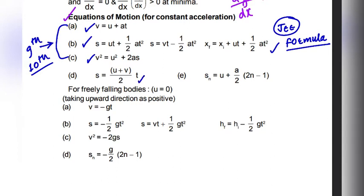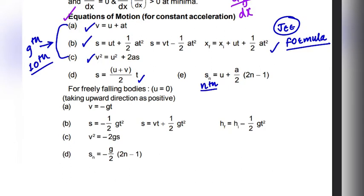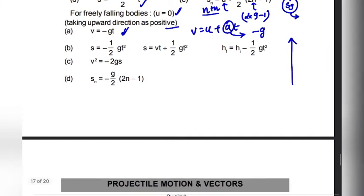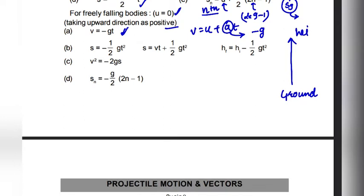After this, we have the equation for the nth second: S_nth = u + a(2n−1)/2. Then for a freely falling body, the initial velocity u is zero. We take upward as positive, so when falling downward, the final velocity is v = −g·t, because acceleration is −g. We always take upward as positive and downward as negative to avoid confusion.